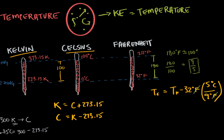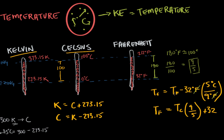We can also rearrange this formula to start with Celsius and find Fahrenheit. Multiplying both sides by the reciprocal of 5/9 and then adding 32, we get the temperature in Fahrenheit equals the Celsius temperature times 9/5 plus 32. So we can convert in either direction between Celsius and Fahrenheit.